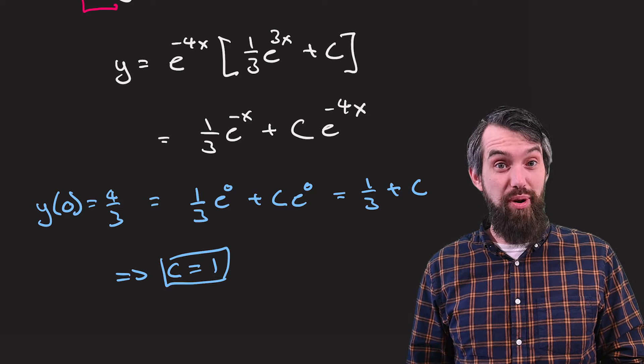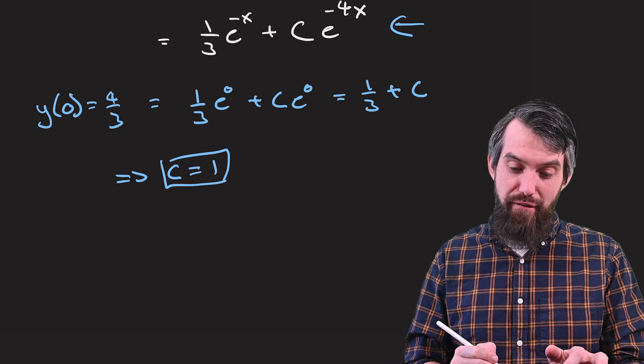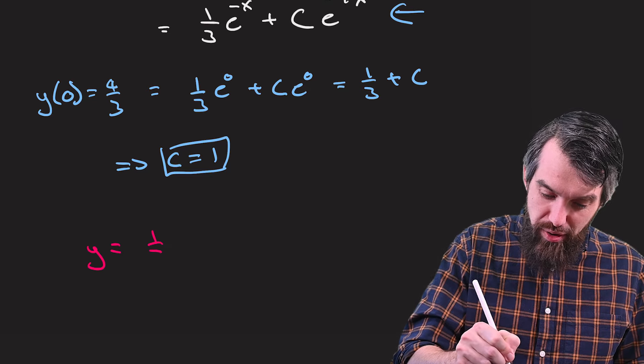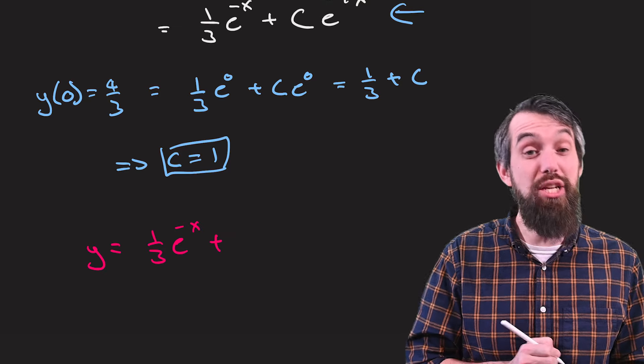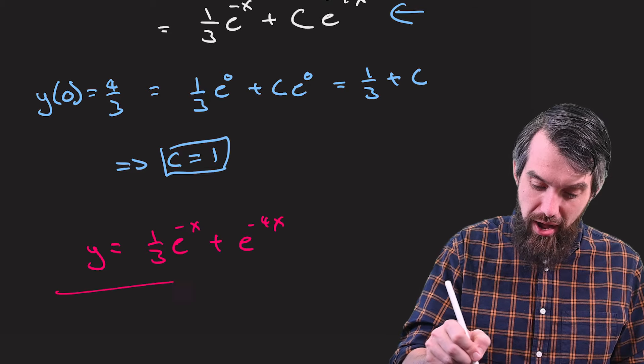And so if I want to put this together with the value of y that I had just computed, I can get my final answer. Here it is. y is 1 third e to the minus x plus C is equal to 1 now, e to the minus 4x final answer.